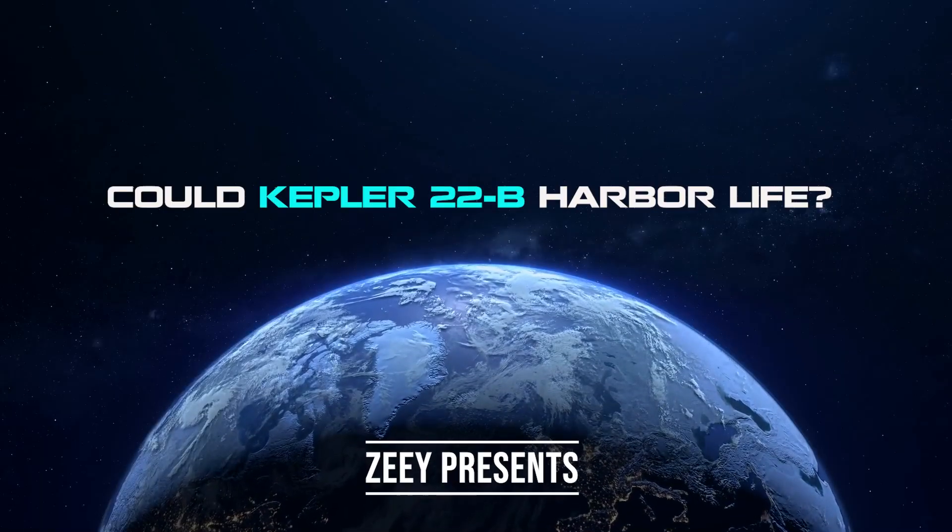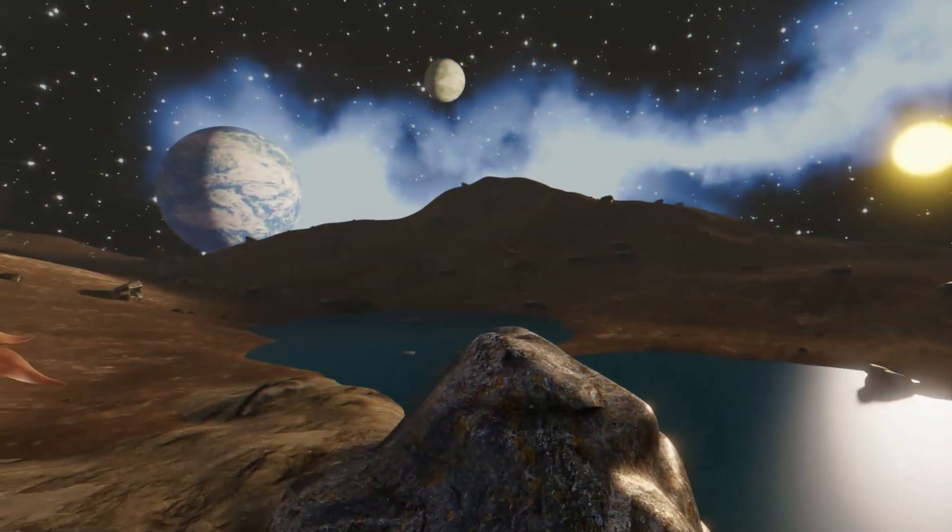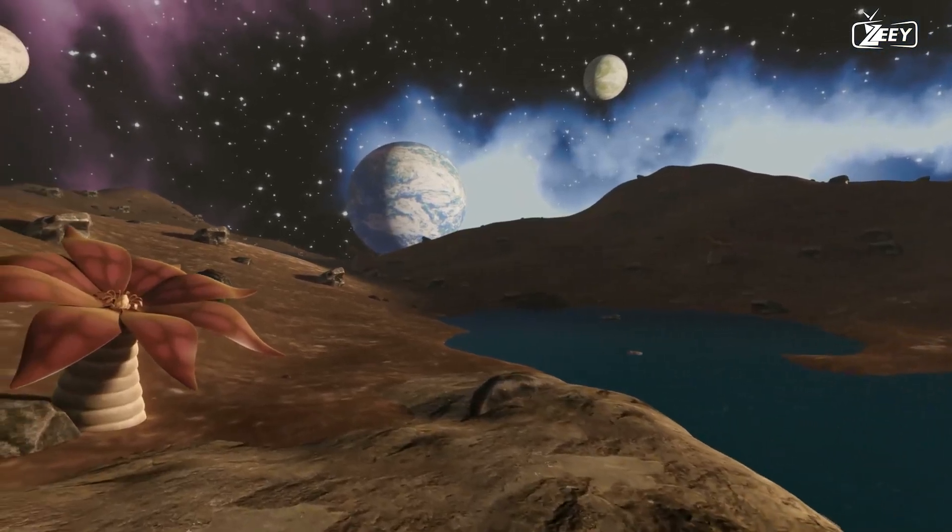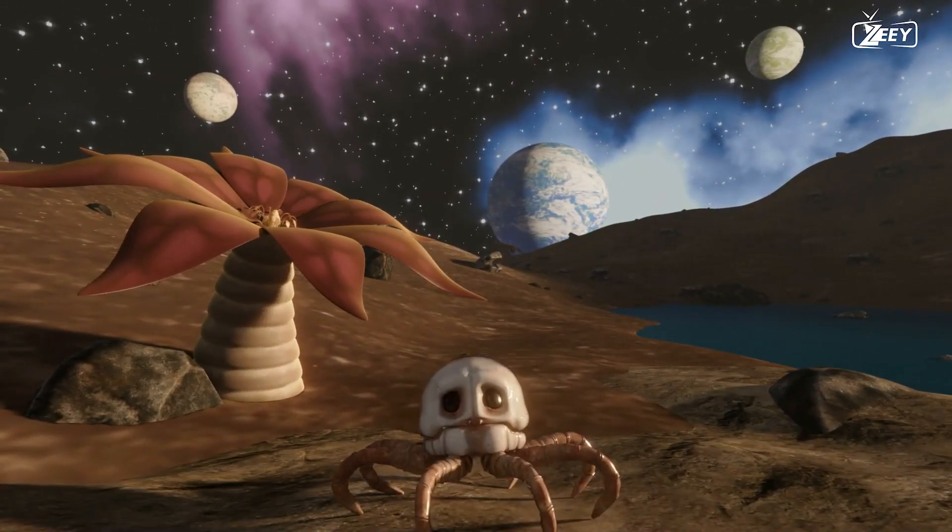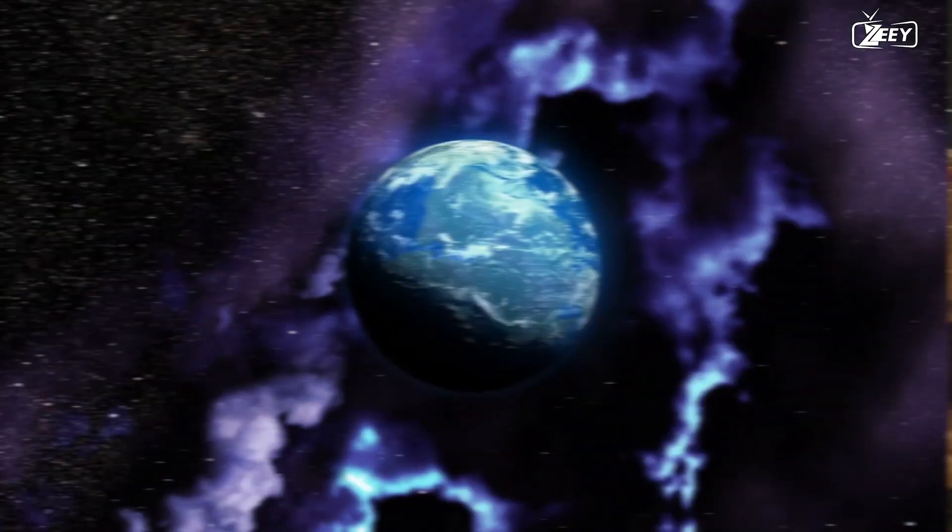Could Kepler-22b harbor life? Will we ever discover an Earth-like exoplanet with lakes, forests, animals, and perhaps some humanoid aliens? What kind of world will it be?